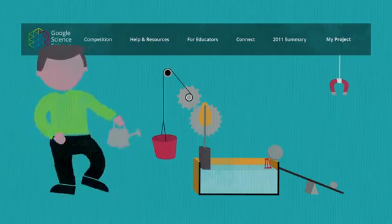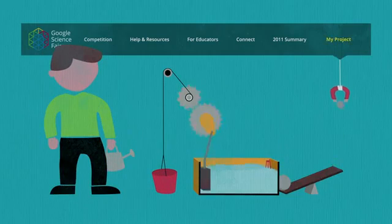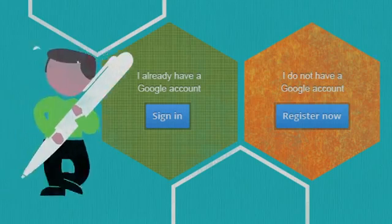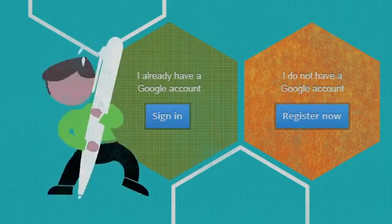Simply click the My Project button in the top right-hand corner of your screen. Sign in with your Google account or easily create an account if you don't have one already.